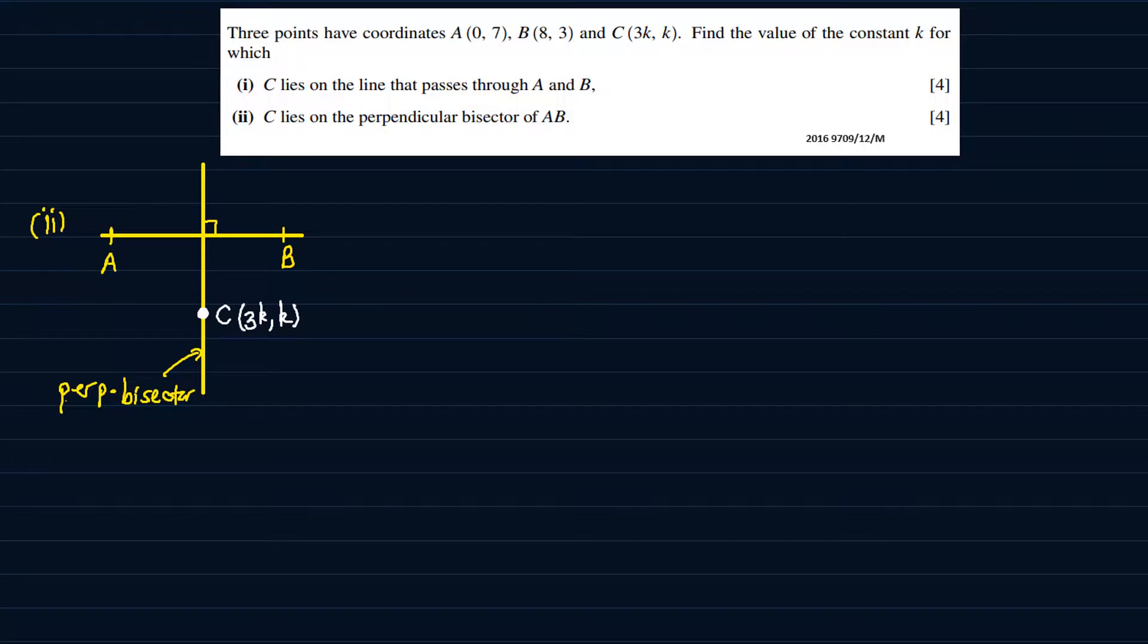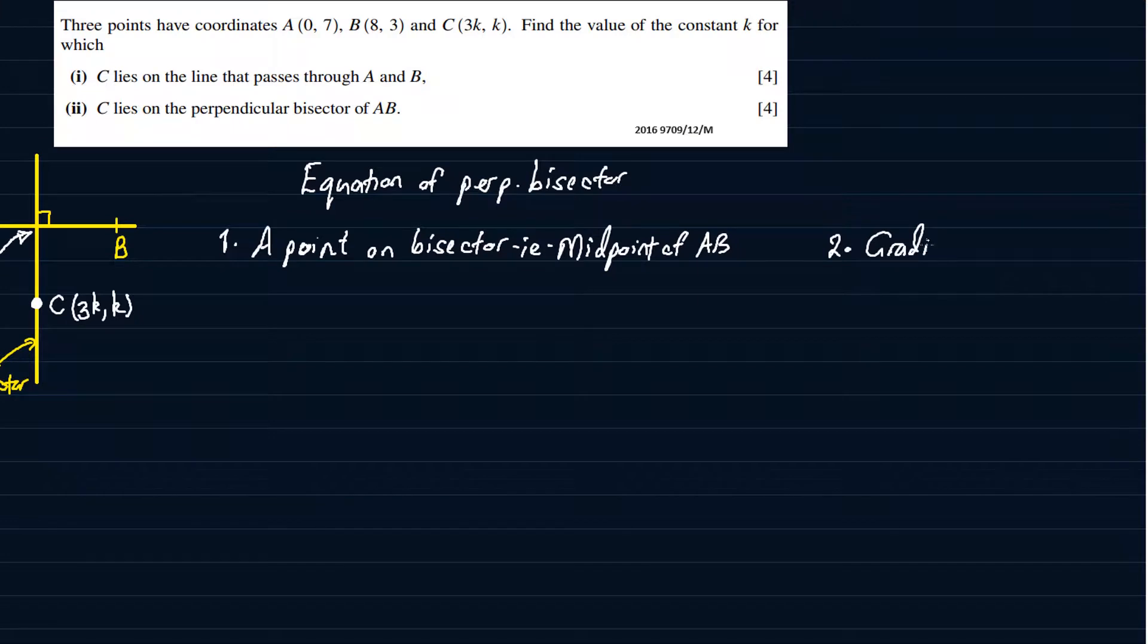So what we're going to do is, we are going to start by finding the equation of the perpendicular bisector. And to do that, we will need two things. Number one, we will need a point on the perpendicular bisector, and this happens to be the midpoint of AB in this case. So we are going to use the midpoint here to be the point on the line. And we are also going to need number two, the gradient of perpendicular bisector. And to find that, we will start by finding gradient of AB first. That's what's going to help us find the gradient of the perpendicular bisector.